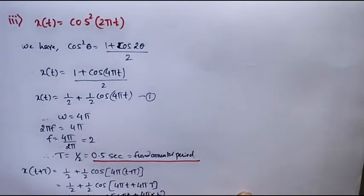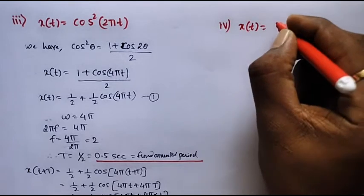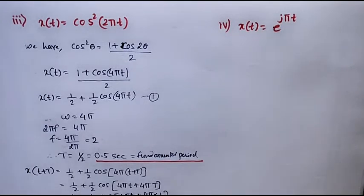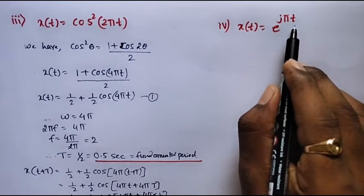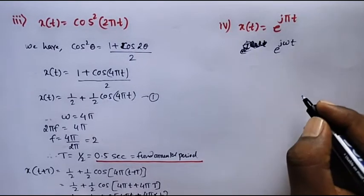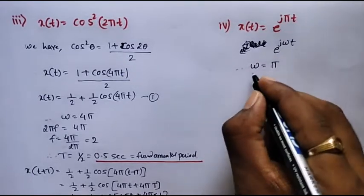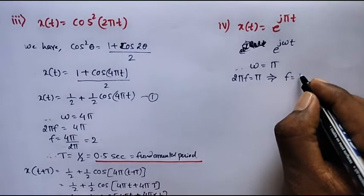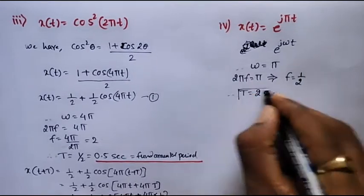Let us consider one more example: x(t) = e^(jπt). We will verify whether it is a periodic or aperiodic signal. Compare this with e^(jωt); therefore ω = π. Omega = 2πf = π, so f = 1/2. Therefore T = 2 seconds. This T is the fundamental period.